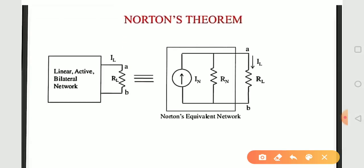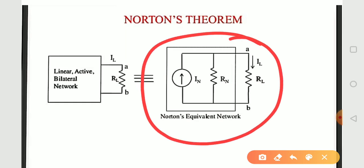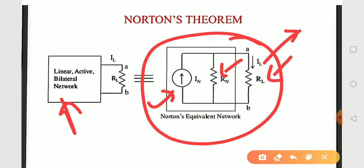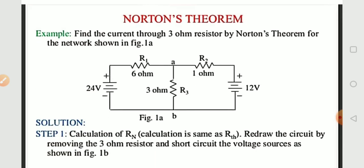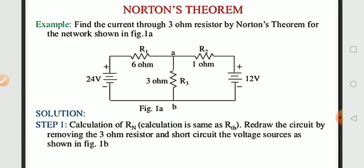Draw the equivalent circuit by replacing the entire network with Norton's current IN in parallel with Norton's resistance RN, connected to load resistance RL. The current through the load resistance is the load current for Norton's theorem. For the procedure: remove the load resistance, replace all power sources with their internal resistance. Let's take an example — find the current through the 3-ohm resistor using Norton's theorem.